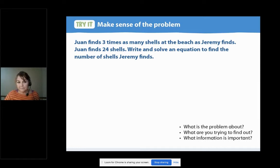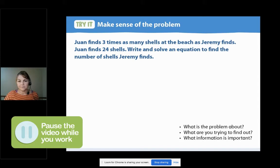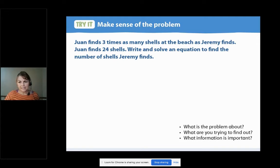Let's go ahead and read it again. Juan finds three times as many shells at the beach as Jeremy finds. Juan finds 24 shells. Write and solve an equation to find the number of shells Jeremy finds. What are we trying to find out in this problem? Pause now and write down what we're trying to find out. Did you have something like we need to find out how many shells Jeremy finds and we're going to have to write an equation for that? Good job.